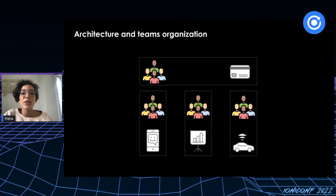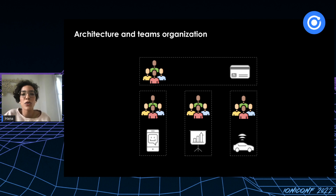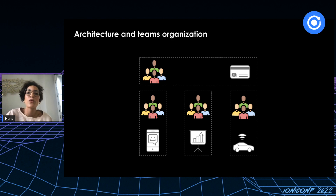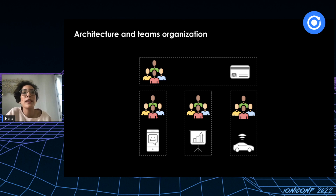Another thing to think about is how to organize teams around the super app, especially in the case of partner services, since those teams will be external to your company. The services are completely separate and different, sometimes requiring several developer teams — for example, one team to develop the chat service, another for the ride-hailing service, and another for a payment service used across all services.